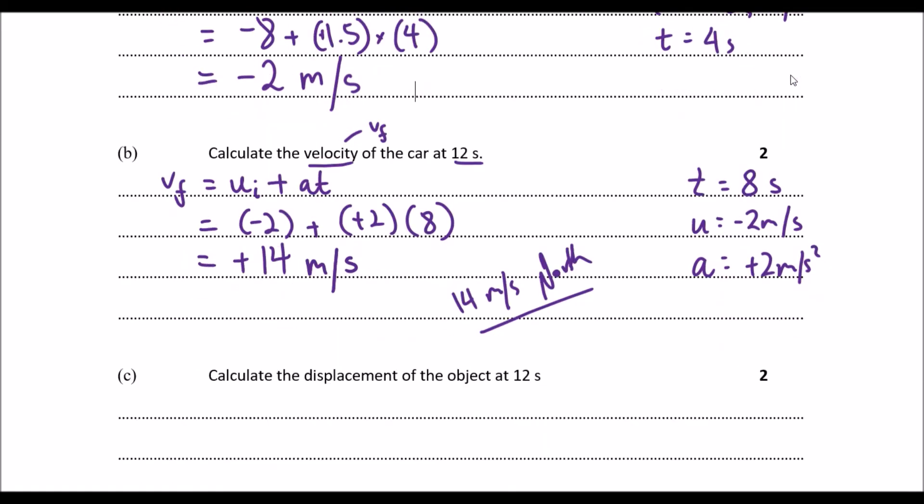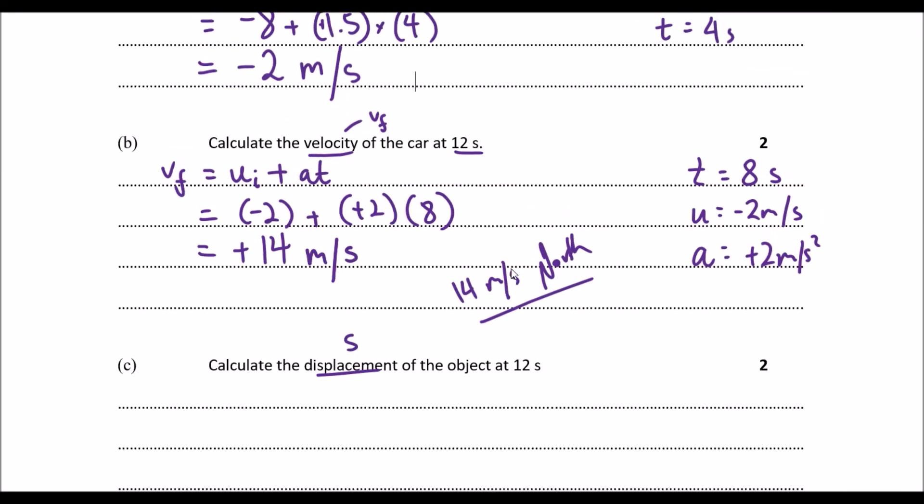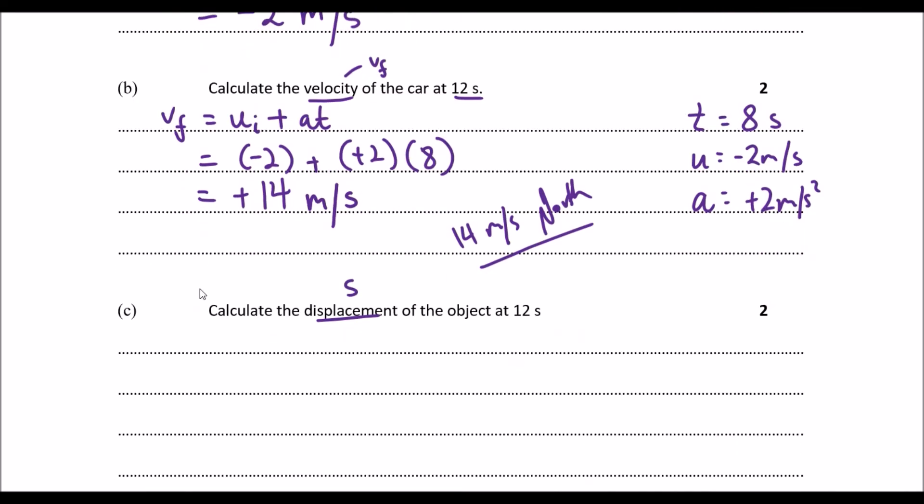It says, calculate the displacement of the object at 12 seconds. Now, this one might be a bit misleading for some people. Again, it's because we have two accelerations. You probably would know the best formula to use here is s equals to ut plus half at squared, because this displacement accounts for the fact that we moved at a constant acceleration. Now, because we have two accelerations, we actually need to account for two segments of the displacement. We need to account for the first section and the second part.